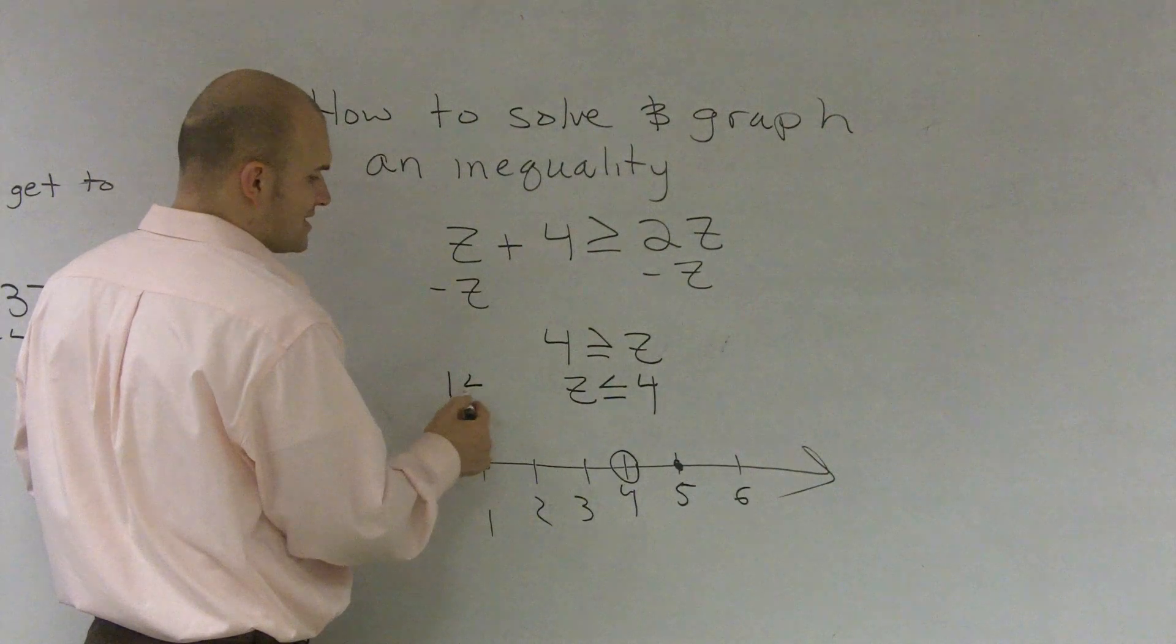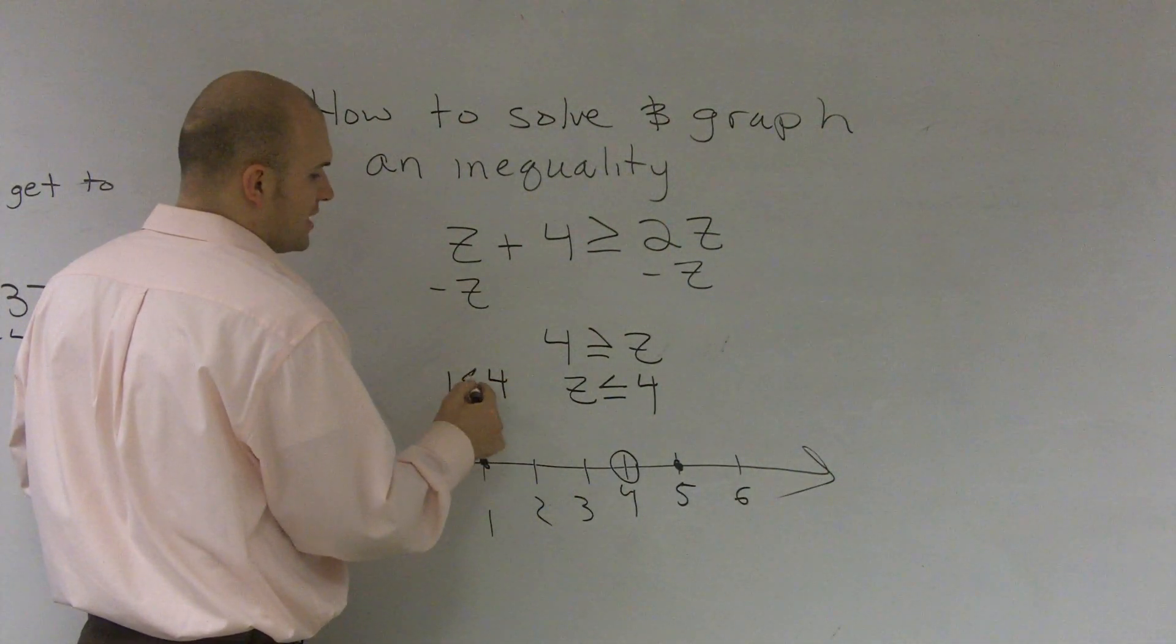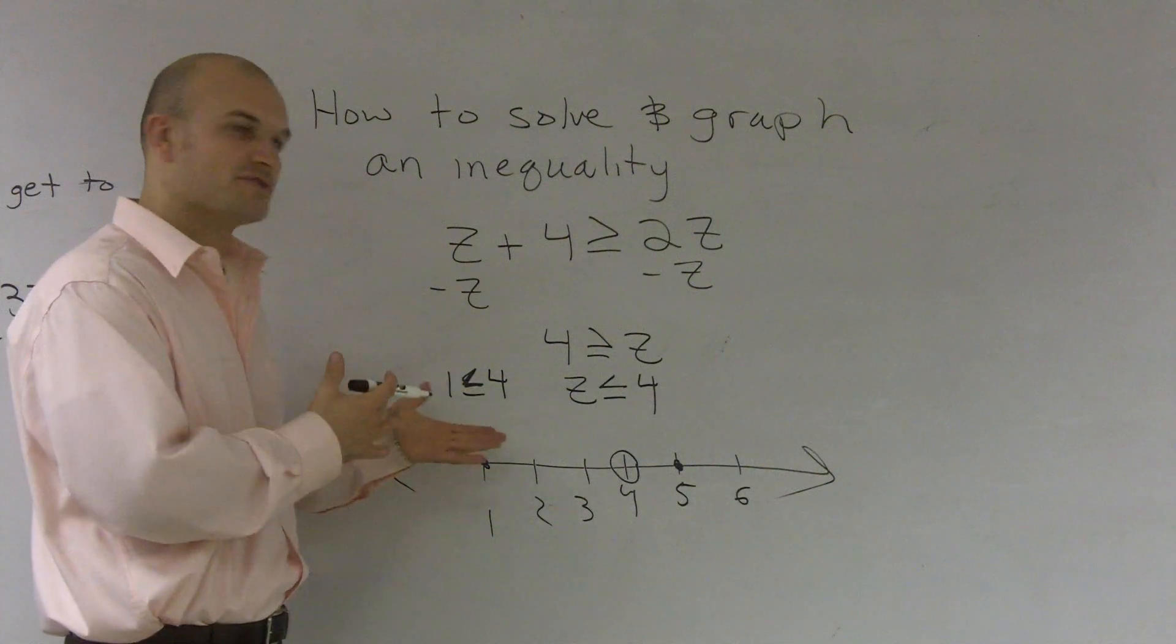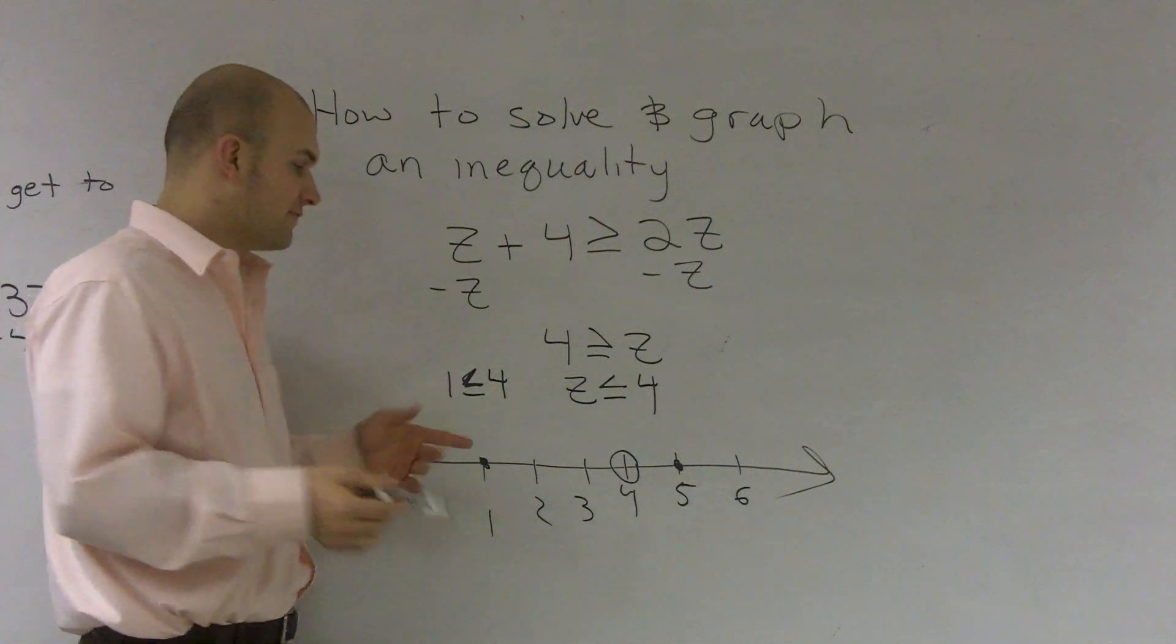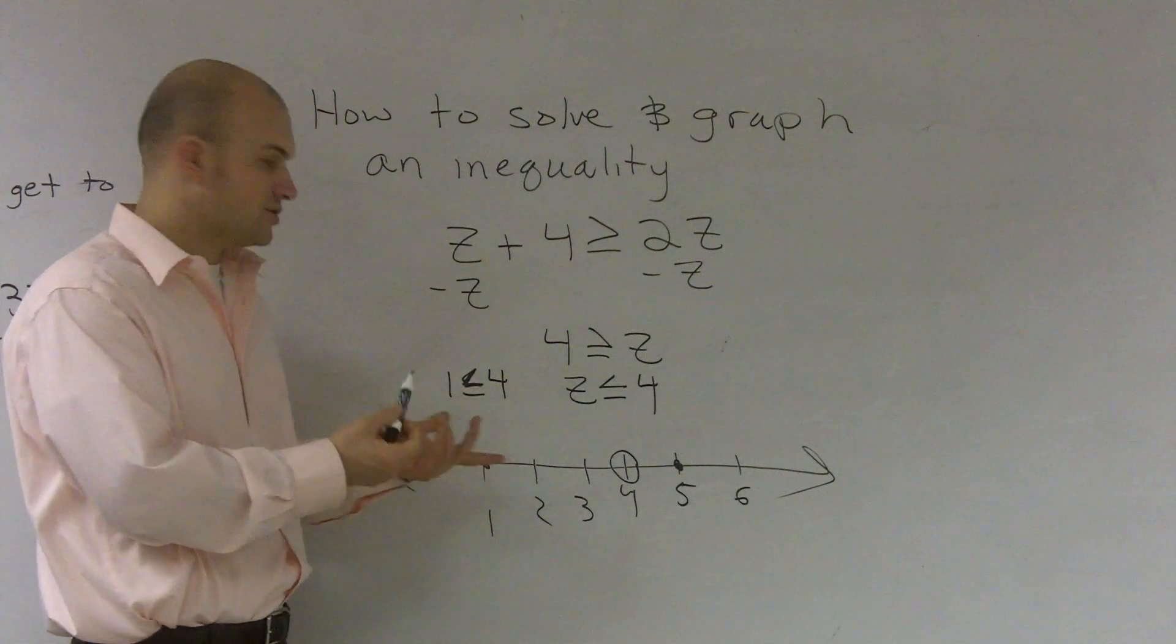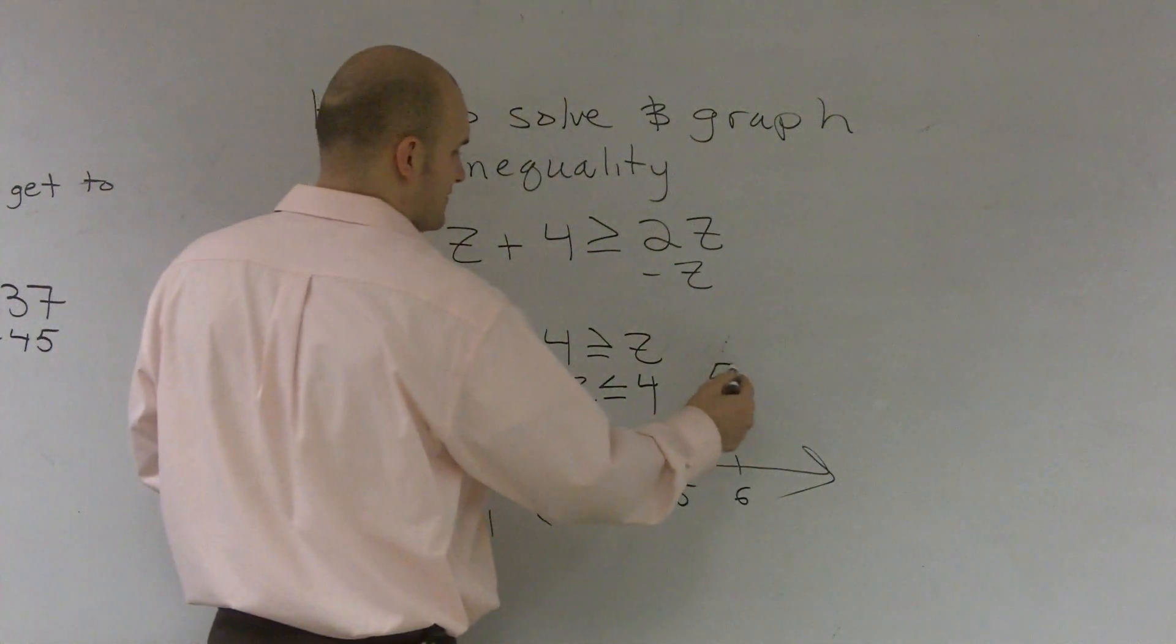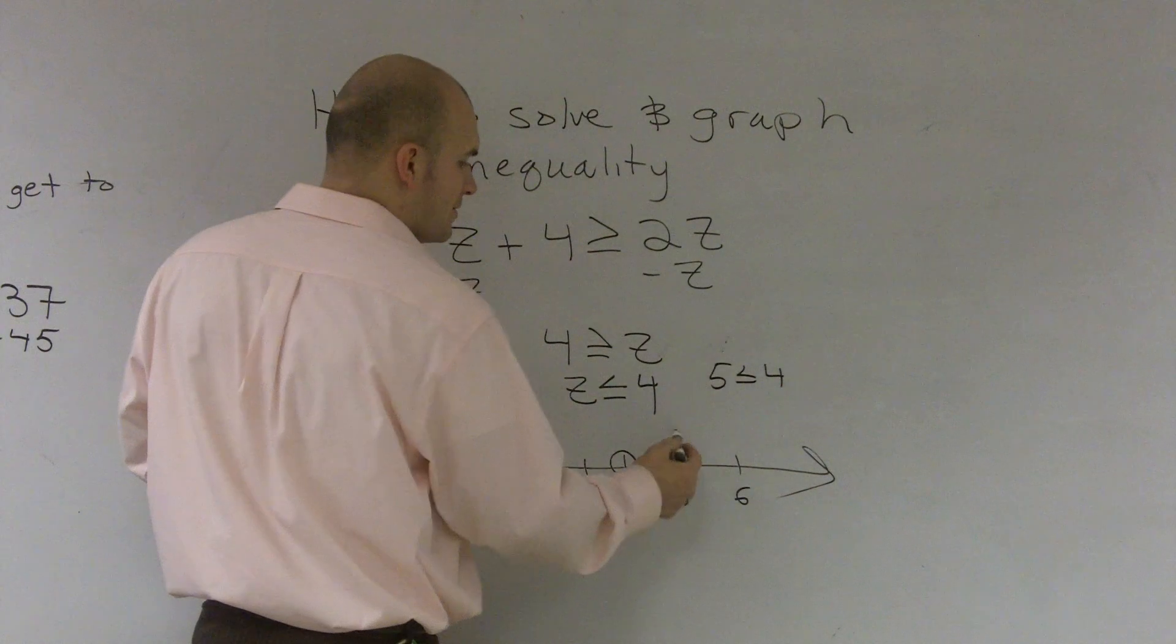I'll plug 1 is less than or equal to 4. It's really helpful just to kind of say that out loud, the less than or equal to, or whatever your symbol is, to really help you understand if it's true or false. Is 1 less than or equal to 4? Yes, that's true. Then I go, 5, is that less than or equal to 4? We know that's false.